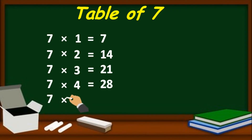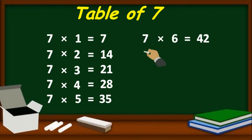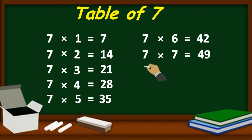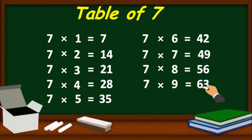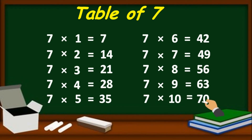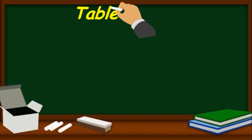7 five's are 35, 7 six's are 42, 7 seven's are 49, 7 eight's are 56, 7 nine's are 63, 7 ten's are 70.